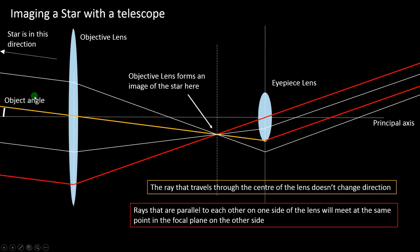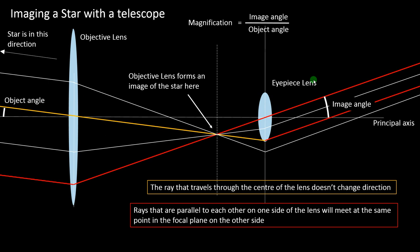We're talking about angular magnification. The object angle coming in is quite small, and even for a relatively low magnification telescope, the image angle — the angle between the rays and the principal axis on the output side — is much larger. When your eye looks at this light, it sees it coming from a larger angle than if looking directly. The definition of magnification is image angle over object angle, but practically it's the objective focal length divided by the eyepiece focal length.